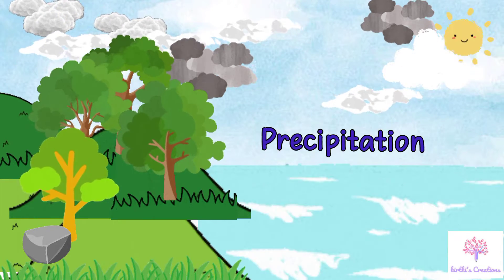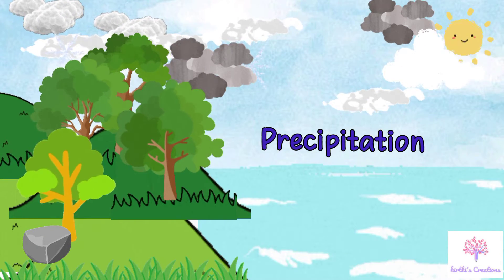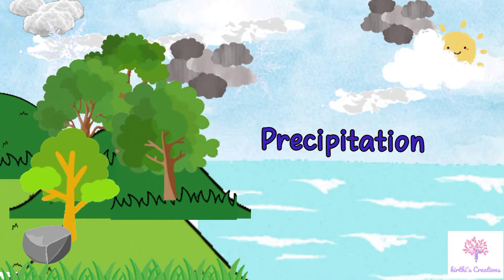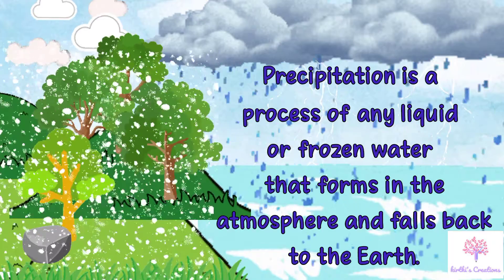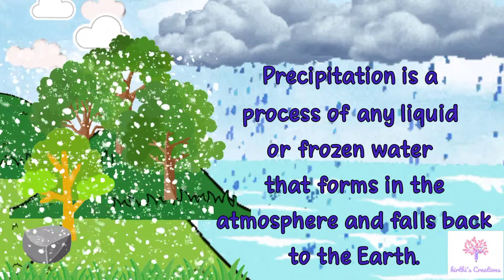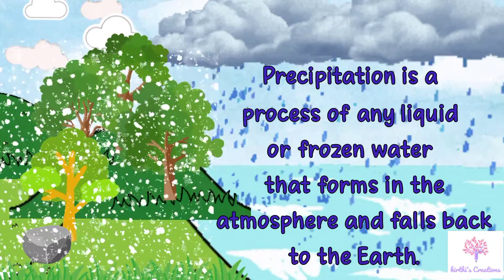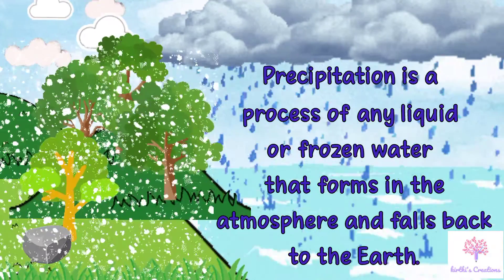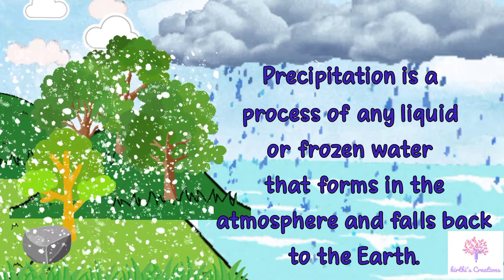Next, precipitation. Precipitation is a process of any liquid or frozen water that forms in the atmosphere and falls back to the earth.